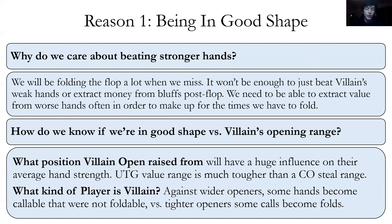It depends on what position they raised from — under the gun has a strong opening range, the button has a weak one. And what kind of player is villain? If they're a nit raising under the gun, they could easily have aces and kings. If they're a weak aggressive fish on the button, we don't have to put much credence in them having strong hands.